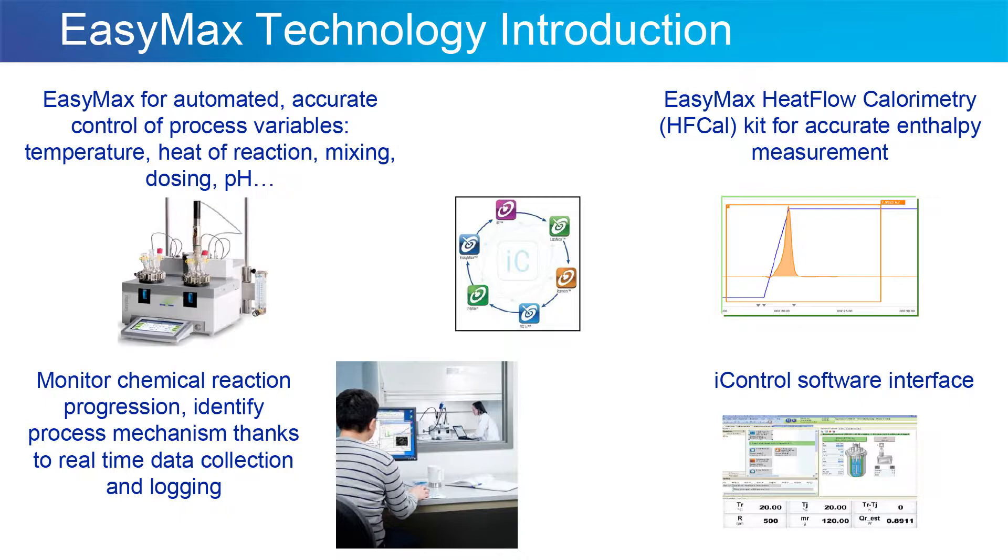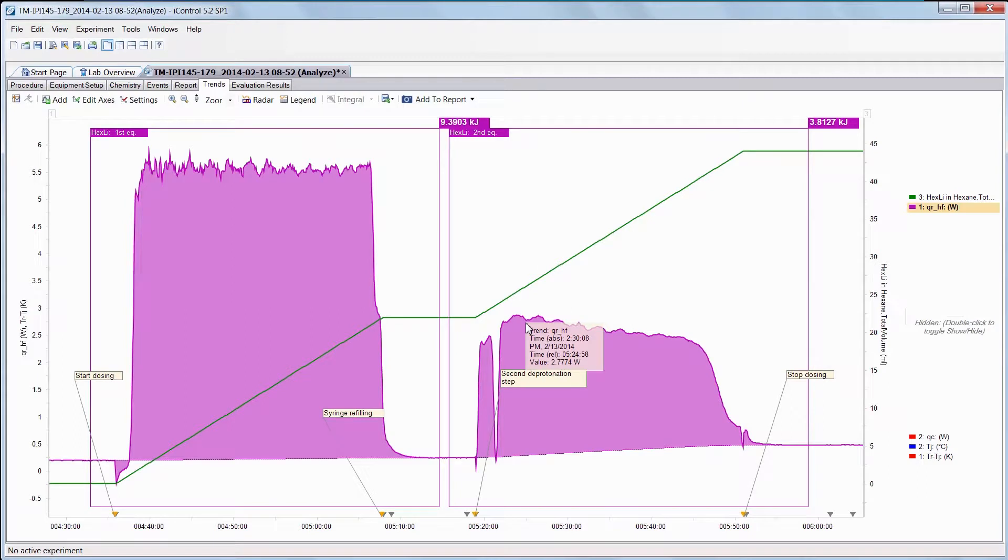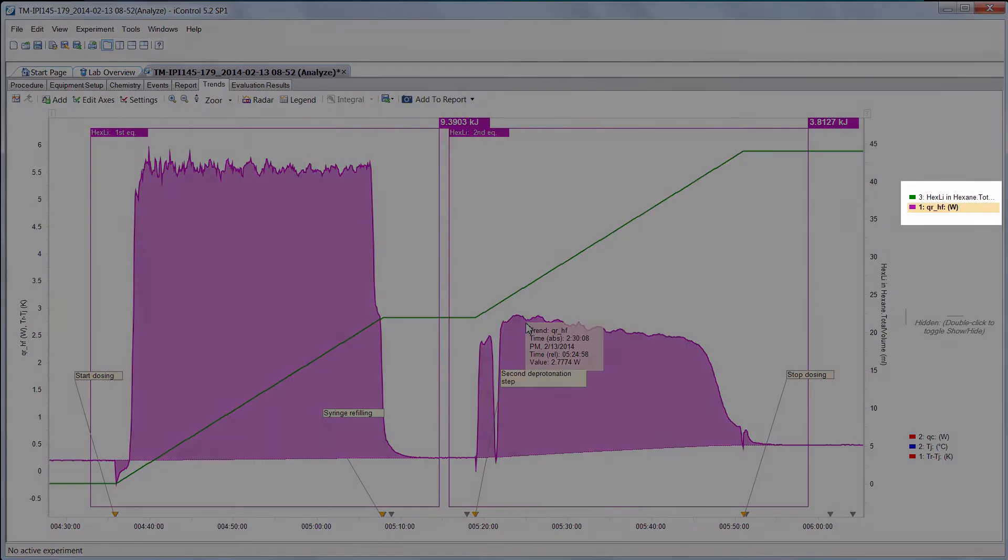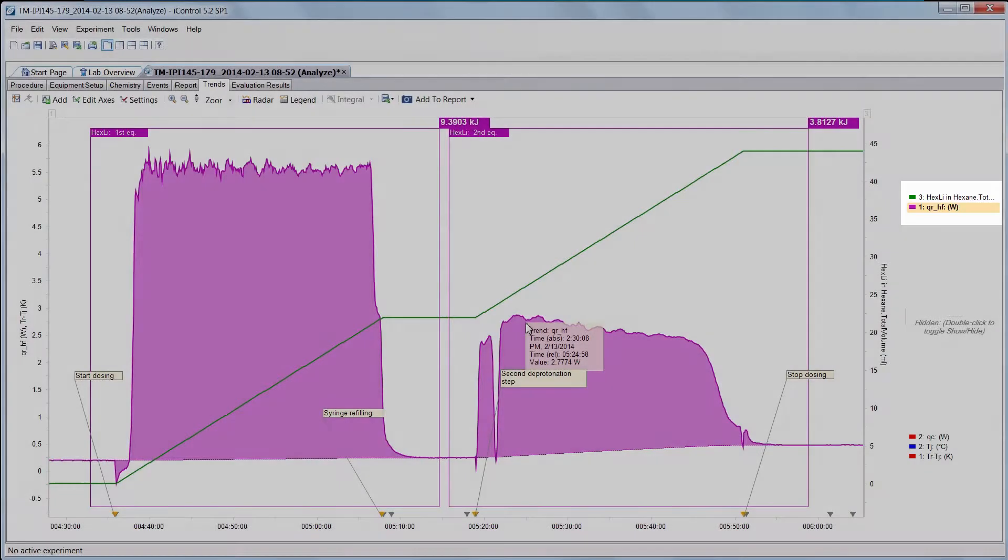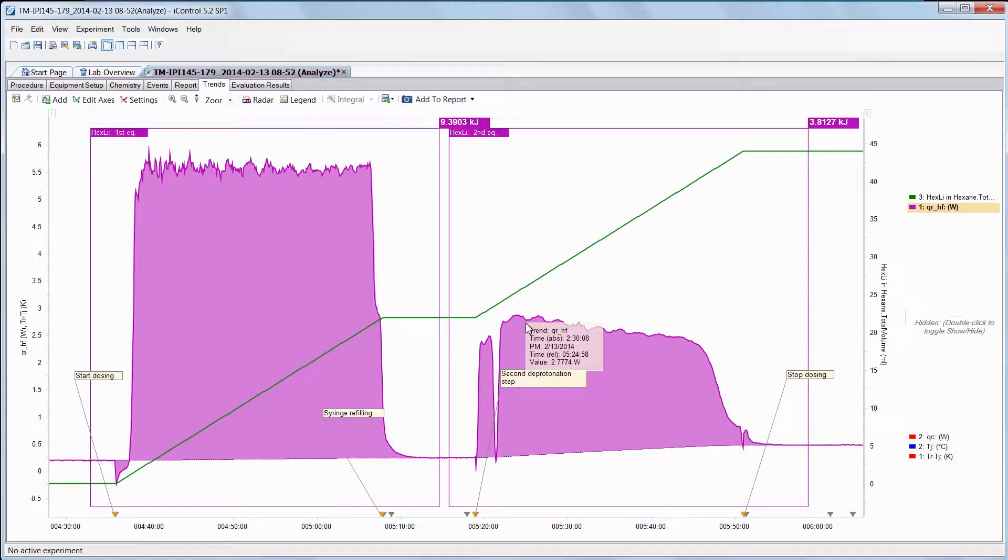Alright, now I'm going to switch to the iControl software page to show you how to interpret the results. So in purple you have the heat that you can read on the left axis. In green you have the dosing profile for the strong base hexylithium that you can read on the right side of the screen, and the volume goes from zero to about 45 milliliters of base to the addition mixture.